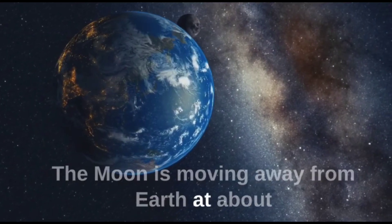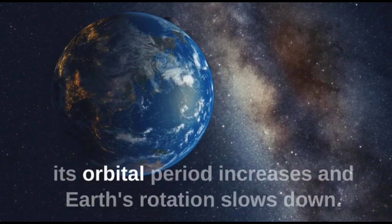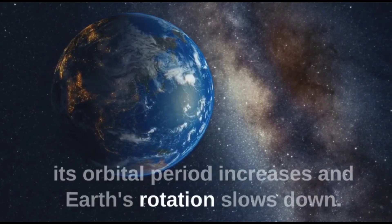The moon is moving away from Earth at about 1.49 inches per year, and as it moves away, its orbital period increases and Earth's rotation slows down.